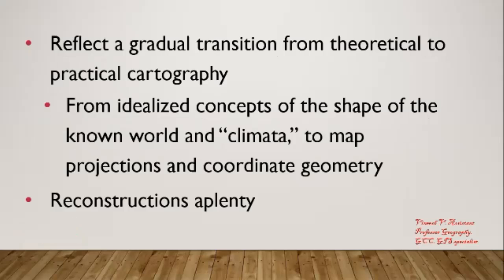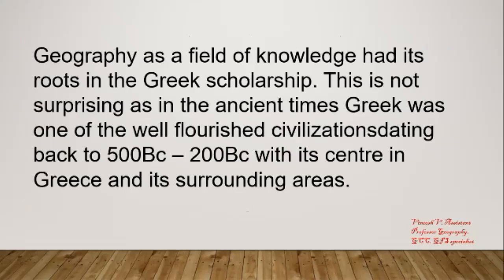Greek literature has an unbroken history of nearly 3,000 years, reflecting a gradual transition from theoretical to practical cartography — from idealized concepts of the shape of the world and 'climata' to map projections and coordinate geometry. Geography as a field of knowledge had its roots in Greek scholarship. This is not surprising, as in ancient times Greece was one of the most flourished civilizations, dating back to 500 BC to 200 BC, with its center in Greece and its surrounding areas.